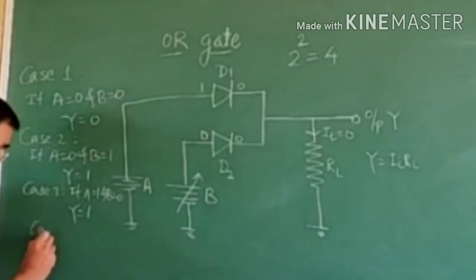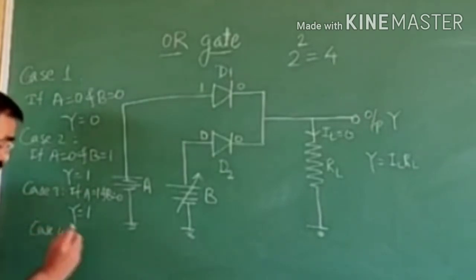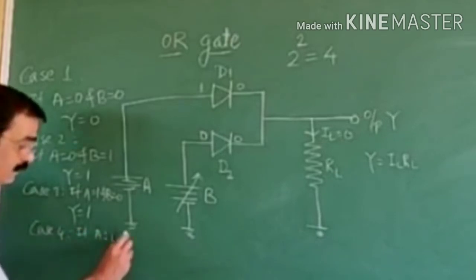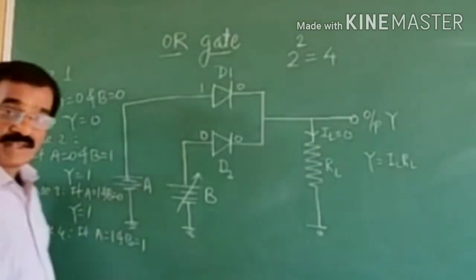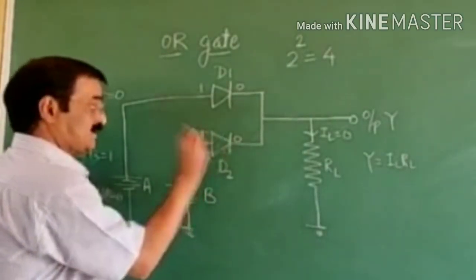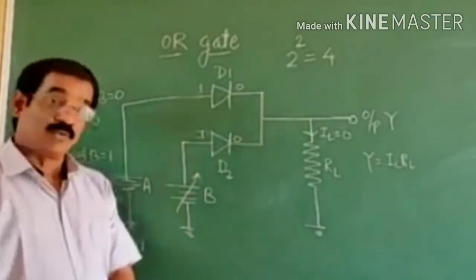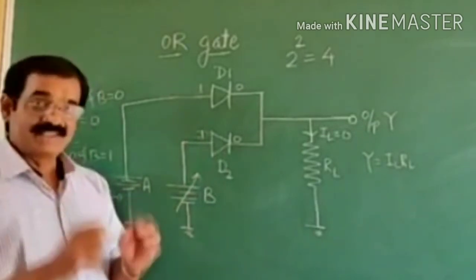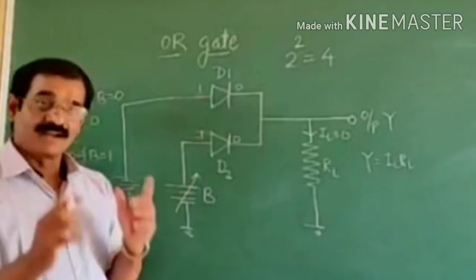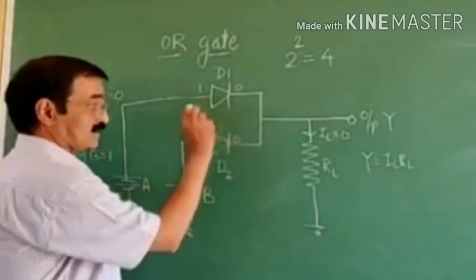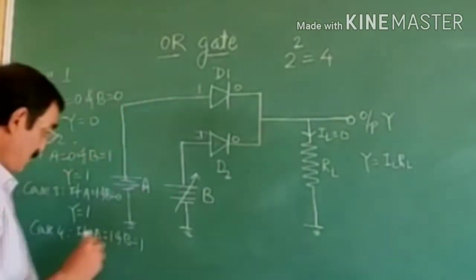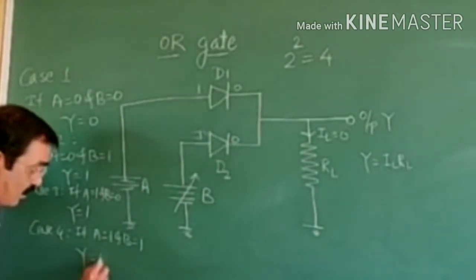And the last case, Case 4: if both inputs A and B are 1, then there is high voltage at the anodes of both diodes. In this case both diodes become forward biased and current flows through both diodes and through the load resistance. Again we get output Y equal to 1.